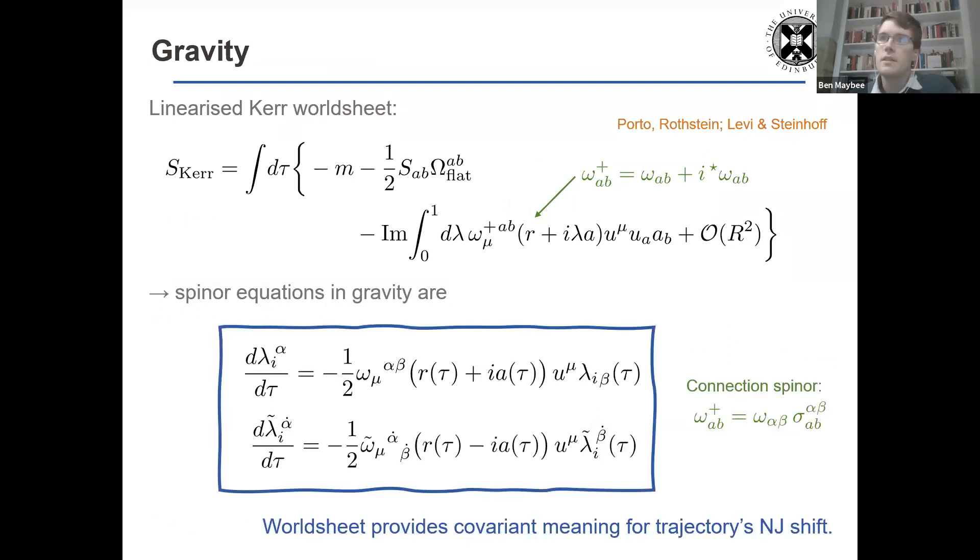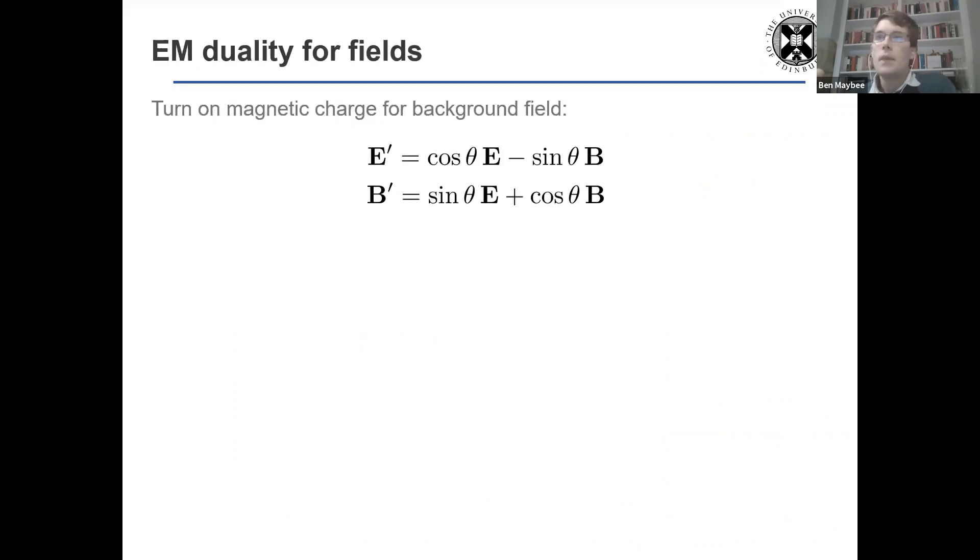And so all we need to do is upgrade where we had a Maxwell spinor, upgrade it to a spinor for the connection. And the covariant meaning now for the Newman-Janis shift, as Donal was arguing in his talk, is provided by the fact the worldsheet, we can interpret this shift as being on geodesics, the tangent vector that's the spin vector.